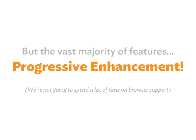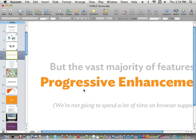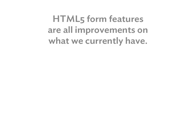The vast majority of features are progressive enhancement. I want to think about HTML5 forms in this context: there are browser support issues, but that could be a 24-hour podcast. I want to think of these features as progressive enhancement — in browsers that support this stuff, great, let's use it. In browsers that don't, most of this stuff falls back gracefully, or we can supplement it with something else. Every HTML5 forms feature is like a good improvement.